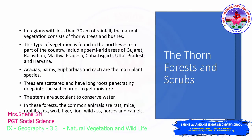Moving on to thorn forests and scrubs. This type of vegetation is found in regions with less than 70 cm of rainfall. The natural vegetation here consists of thorny trees and bushes. This type of vegetation is found in the north-western part of the country, including semi-arid regions of Gujarat, Rajasthan, Madhya Pradesh, Chhattisgarh, Uttar Pradesh, and Haryana. Acacia, palm, euphorbia, and cactus are the main plant species. Trees here are scattered and have long penetrating roots that go deep into the soil to obtain enough moisture. The stems are succulent, meaning they have the ability to store water.